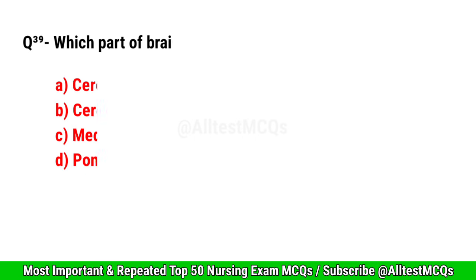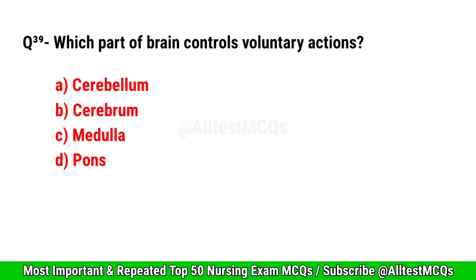Question No. 39. Which part of the brain controls voluntary actions? Correct option is B. Cerebrum.